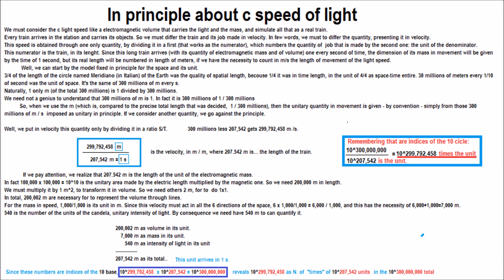For the mass and speed, 1,001 is its unit in m. Since this velocity must act in all the six directions of the space, 6 by 1,000 and 1,000th equals 6,000 and 1,000th, and this has the necessity of 6,000 plus 1,000 equals 7,000 meters.